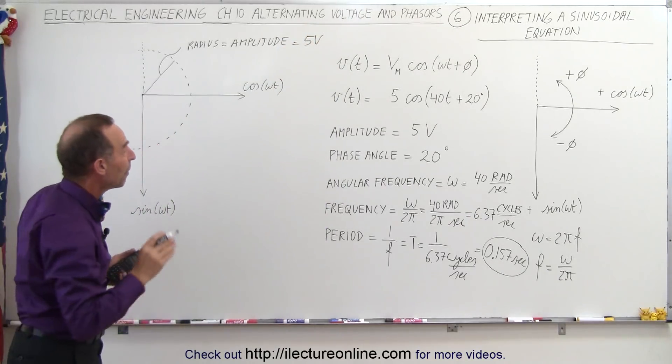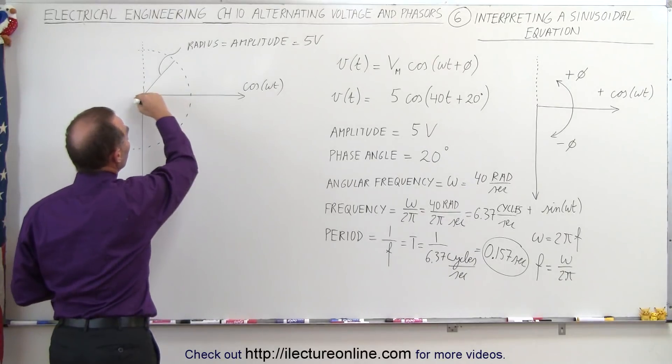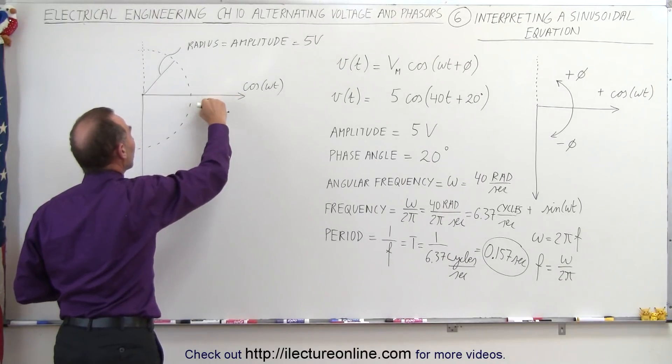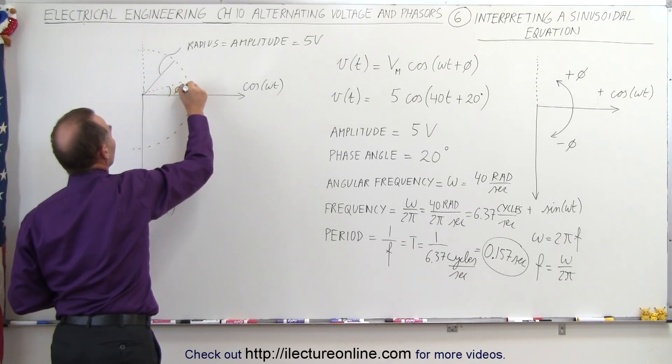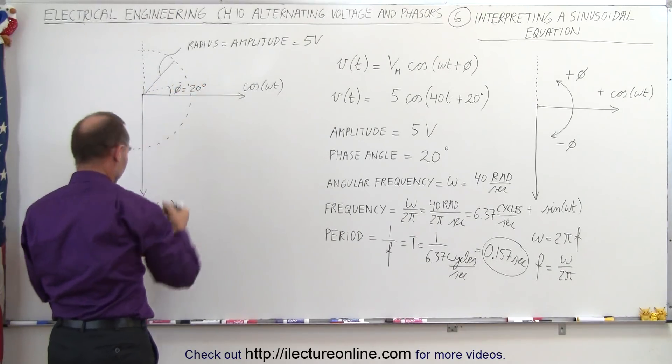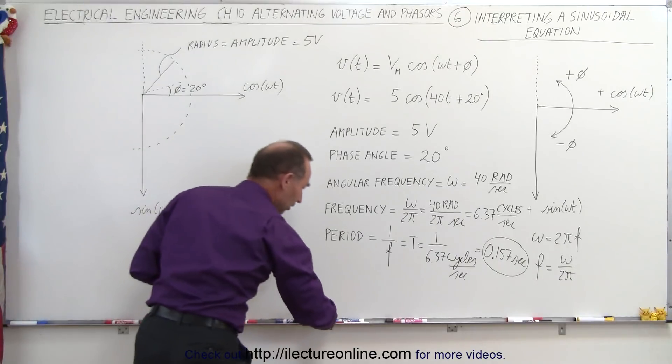Next the phase angle, positive 20 degrees. That would be from the horizontal positive axis, 20 degrees up, like this. So if this is equal to the phase angle, equal to 20 degrees, then you can see that we can actually draw this.